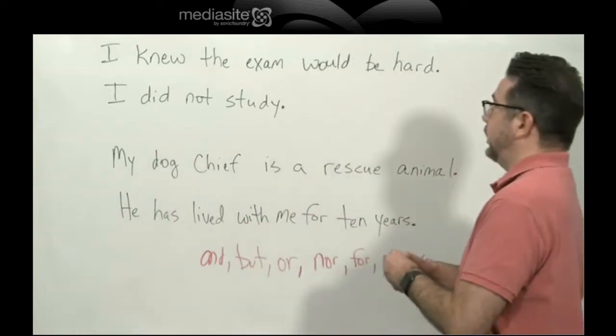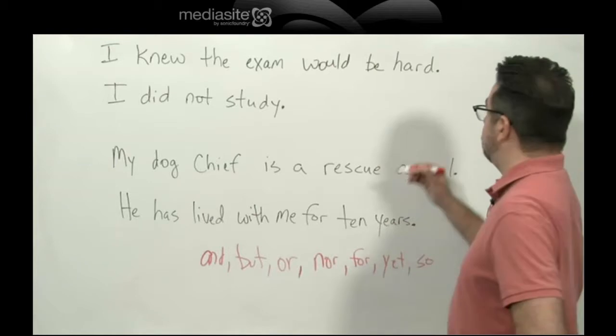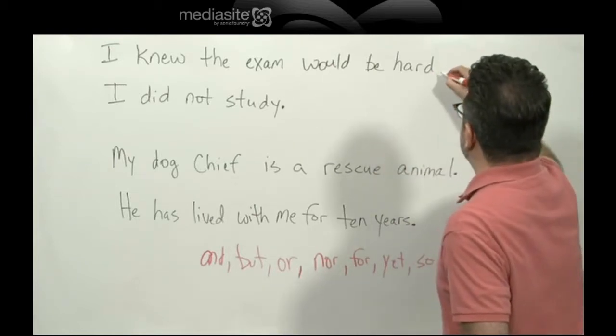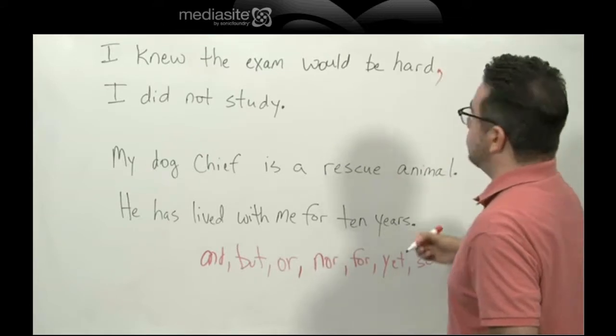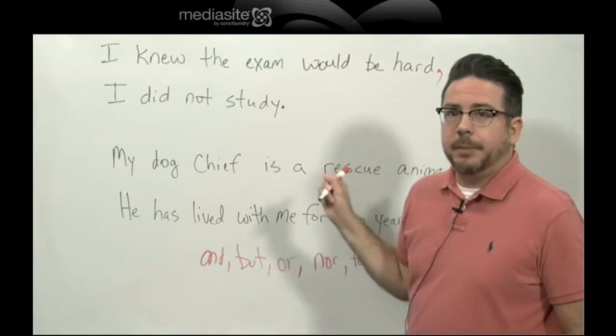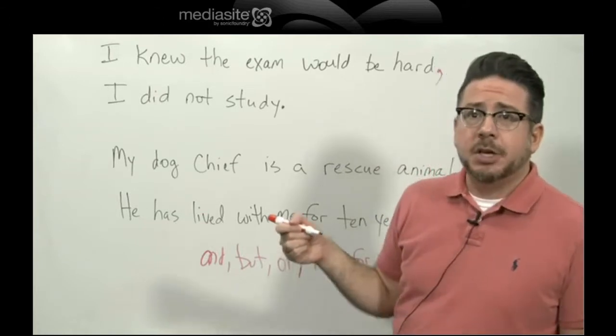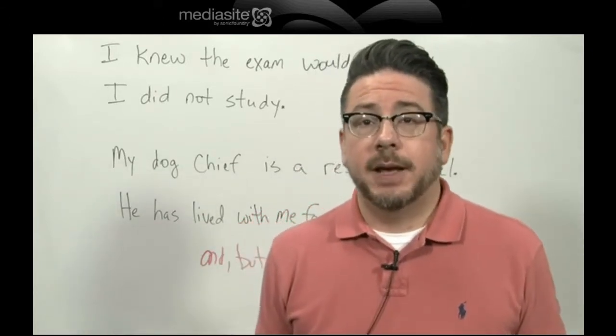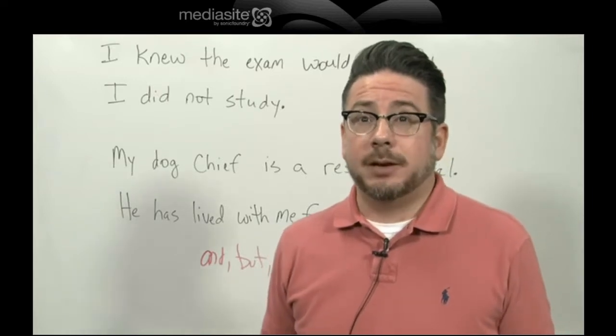Well, one thing we could do is add a comma between them. I knew the exam would be hard. Let's take out this period and replace it with a comma. Now we can't stop here because when we have two complete sentences joined with just a comma, we call that a comma splice. That's a form of run-on and it's a grammatical mistake.